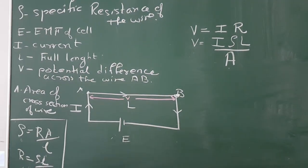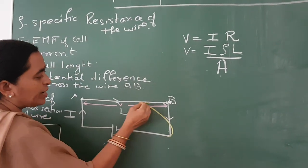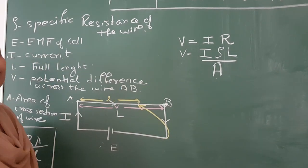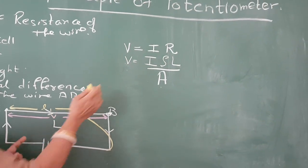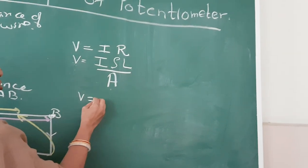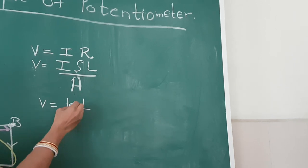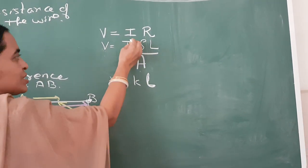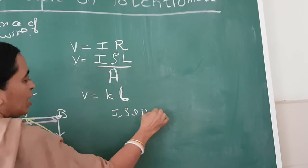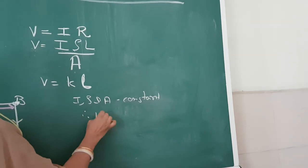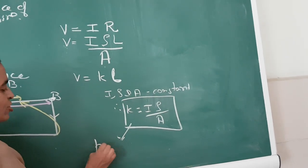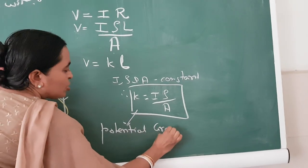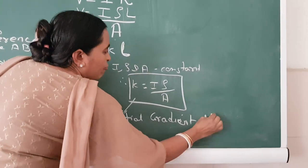Now suppose you change the length to L1 — you tap it somewhere at distance L1. Then V will change since the length has changed. From this equation, V equals K into L, where I, rho, and A are constants. Therefore K equals I times rho divided by A. This K is known as the potential gradient of the wire.